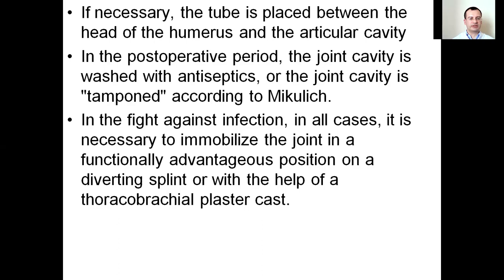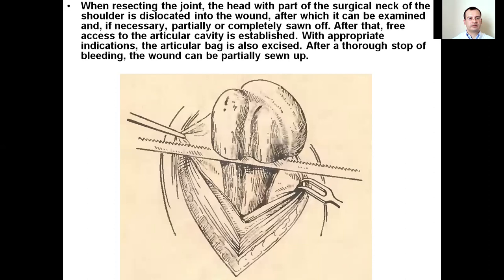When resecting the joint, the head with part of the surgical neck of the shoulder is dislocated into the wound, after which it can be examined and if necessary partially or completely removed. Free access to the articular cavity is then established, and with appropriate indication the articular capsule is also excised. After thorough hemostasis, the wound can be partially closed.